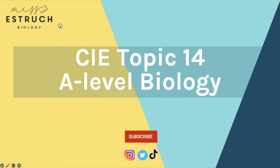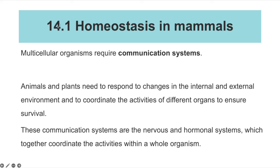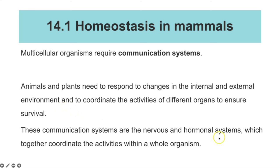Let's get into topic 14 which is on homeostasis, starting with homeostasis in mammals. Multicellular organisms require a communication system, and animals and plants need this to respond to changes in their internal and external environment and to coordinate the activities of different organs to help them survive. These communication systems are the nervous and hormonal systems, which together coordinate the activities of the whole organism.